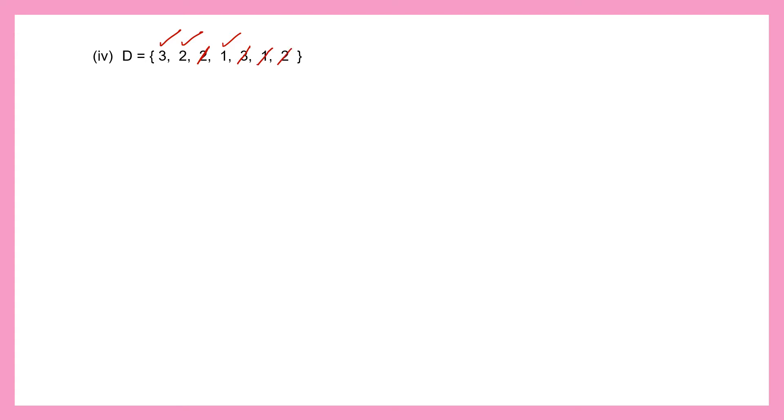Moving on to set D. Set D has many elements, but there's one rule we need to follow: we cannot repeat numbers. So let's count what numbers we have: 3, 2 — now 2 has already been mentioned, so I will strike it off — 1, 3 again so don't repeat, 1 again, 2 again. So we have 3, 2 and 1. That means there are only 3 elements, so the cardinal number of set D is 3.